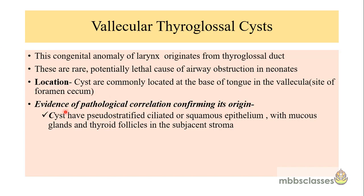To confirm whether the vallicular cyst is of thyroglossal duct origin or not, it is seen that if the cyst has pseudostratified ciliated or squamous epithelium with mucous glands, and specifically the presence of thyroid follicles in the stroma, it makes the diagnosis of vallicular thyroglossal cyst. But if the thyroid follicles cannot be identified in the histopathological specimen, then this cyst is labeled as a vallicular cyst based on the location of the cyst in the vallecula.